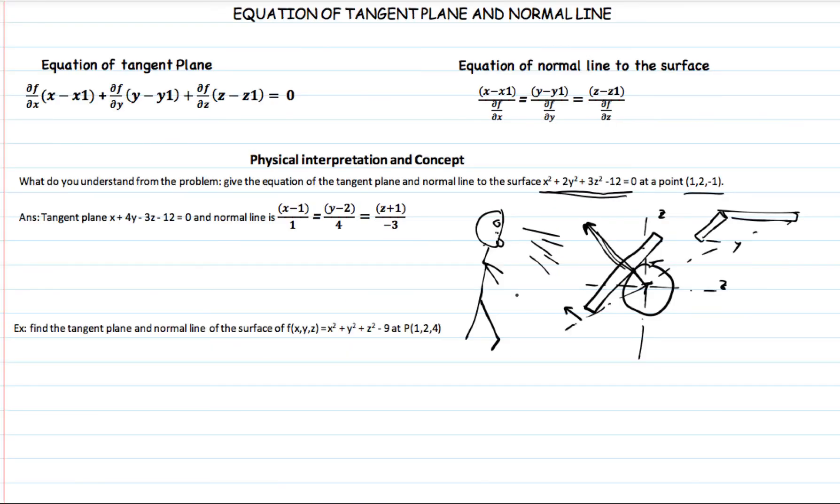Coming back to the problem, if we're given the surface in which we have to find the tangent plane and we're also given the point of contact, we can now find how the plane is located at that surface and we can also find its orientation after we are given the equation of the normal line.